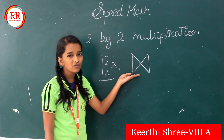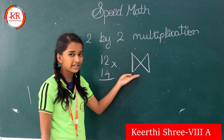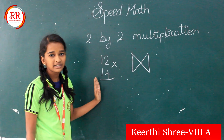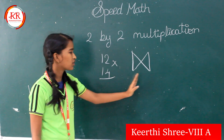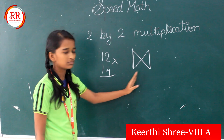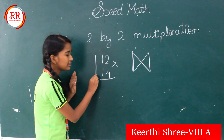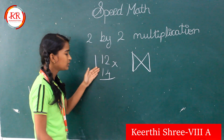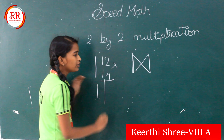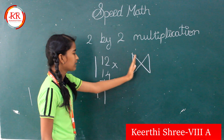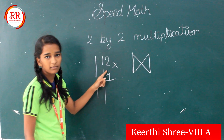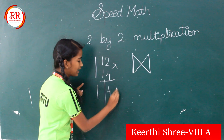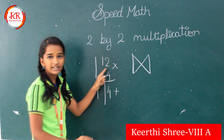This is the symbol of 2 by 2 multiplication, that is 4. So now we are going to multiply these numbers according to this symbol. First we are going to multiply the left corner numbers: 1 into 1 is 1. And we are going to cross multiply these 2 numbers, that is 1 into 4 plus 1 into 2.